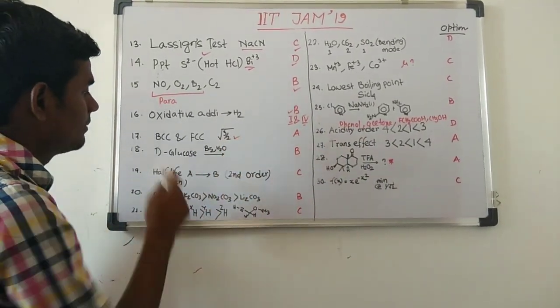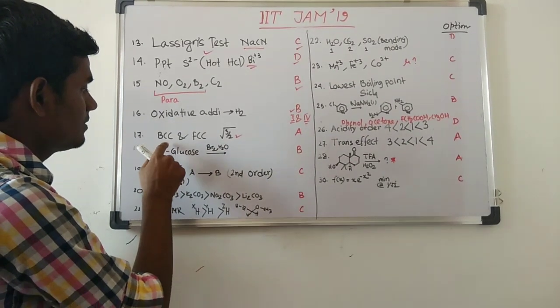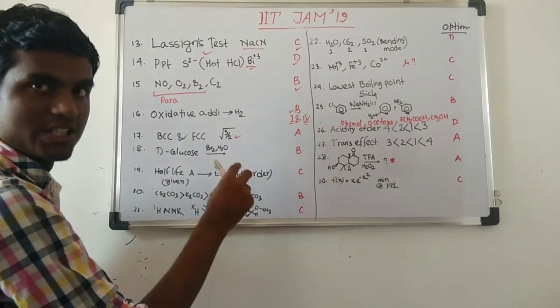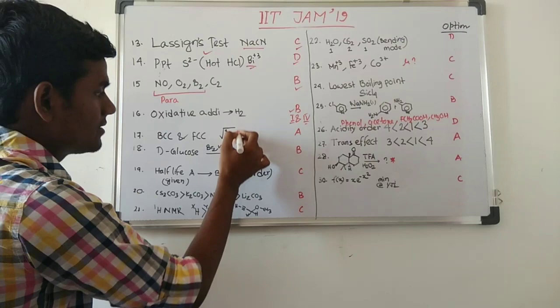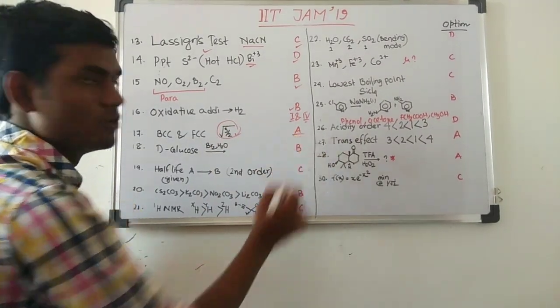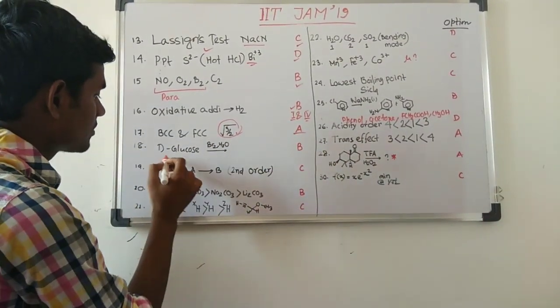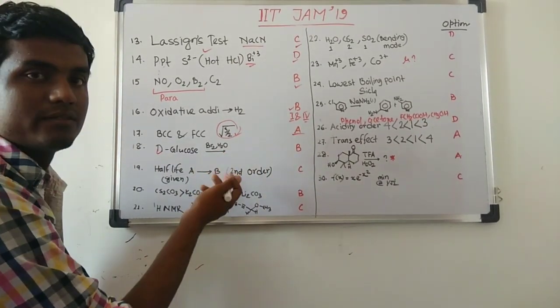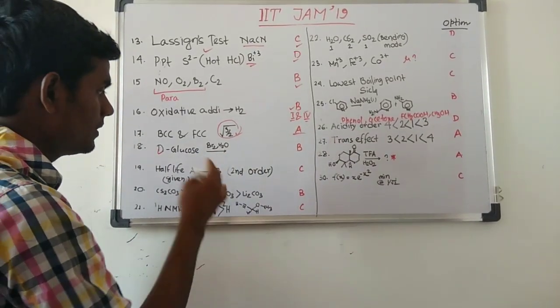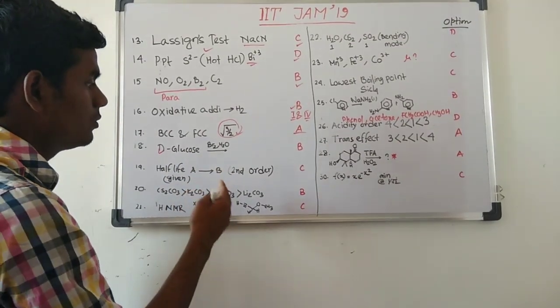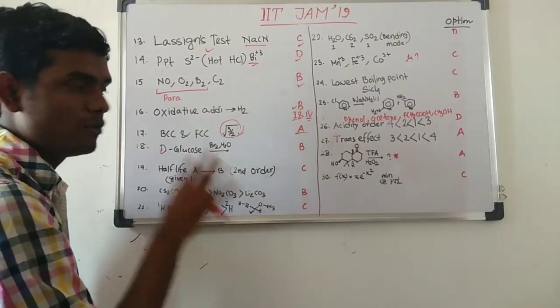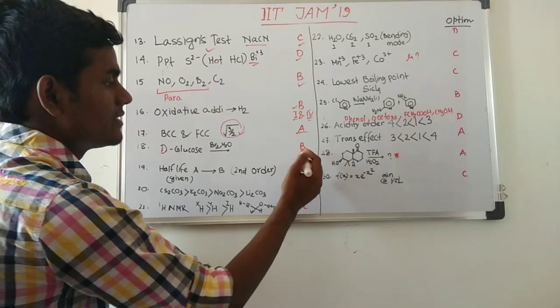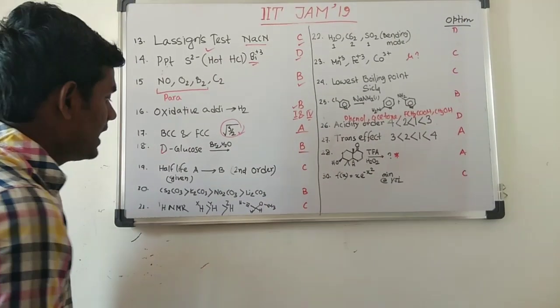Then they have asked a question about nearest distance in BCC and FCC and the ratio. The answer is root 3 by 2 and option will be A. Then they have asked one question: D-glucose which upon treatment with bromine water and then followed by removal of one carbon group, they have given a product. So among the four options that will give the same product is option D.